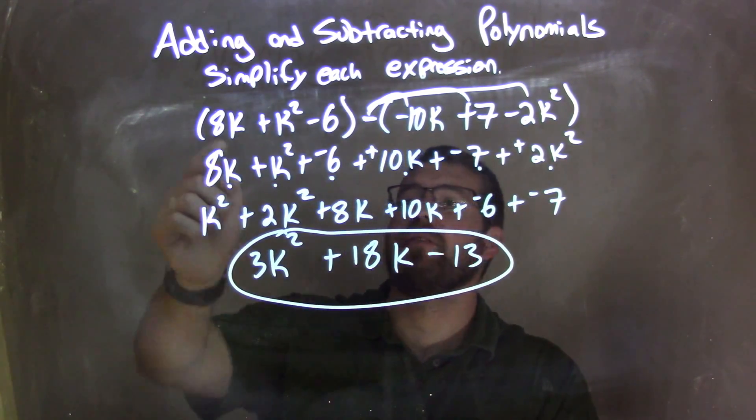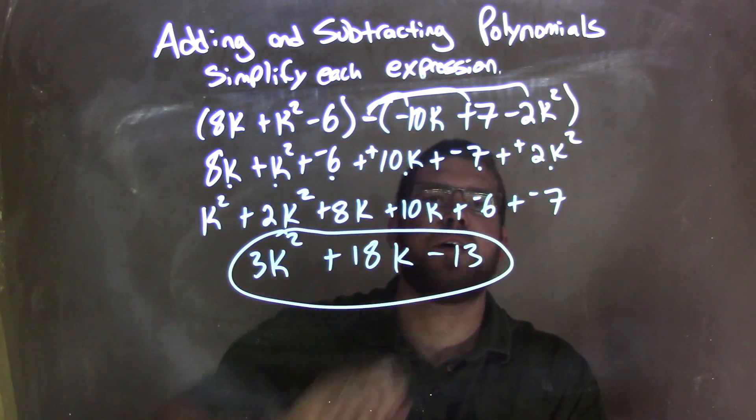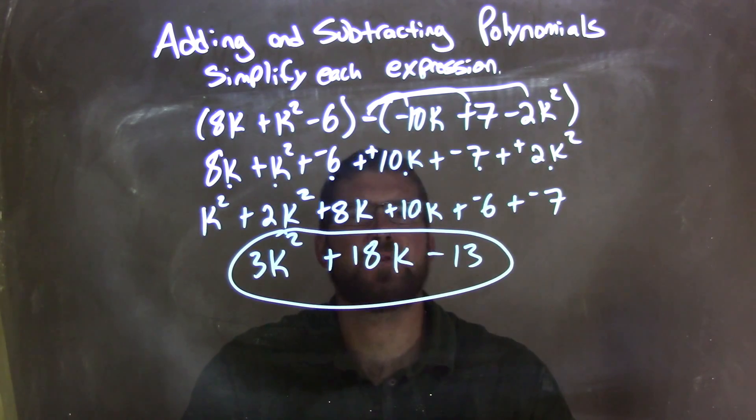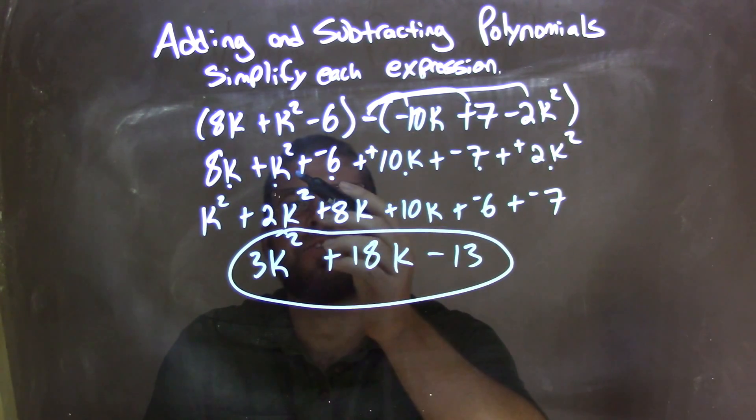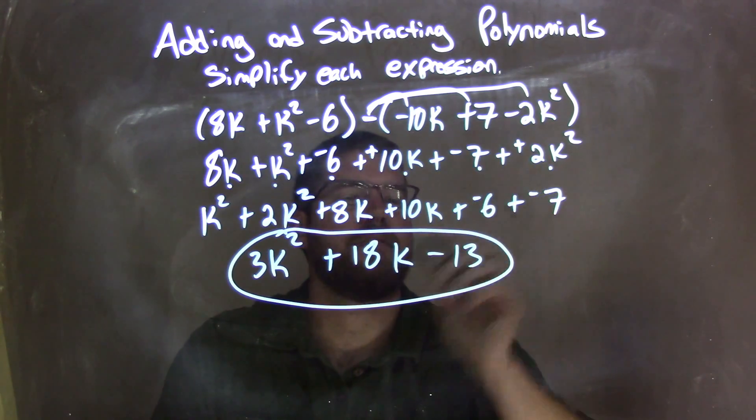Let's recap. We're given 8k plus k squared minus 6, and then subtract the parentheses with negative 10k plus 7 minus 2k squared. I made everything to be added negative, which I find easier, and distributed the subtraction sign. That gave me 8k plus k squared plus a negative 6 plus a positive 10k plus a negative 7 plus a positive 2k squared.